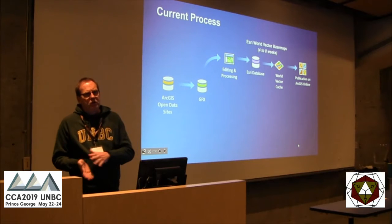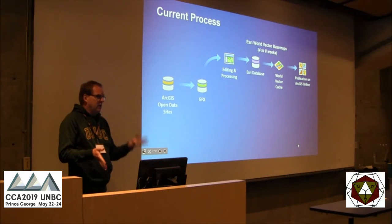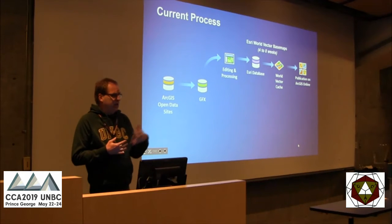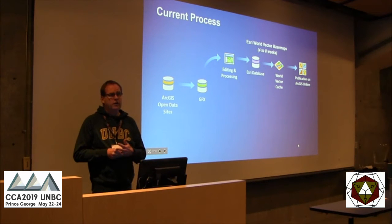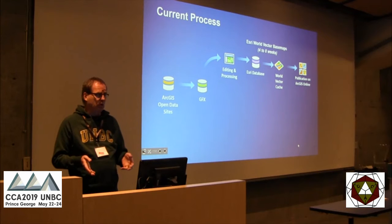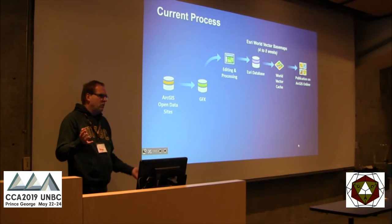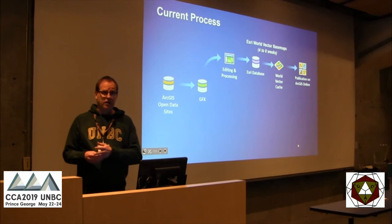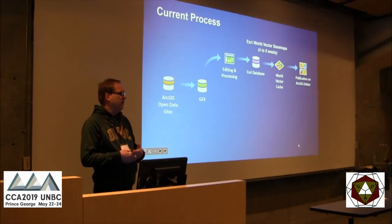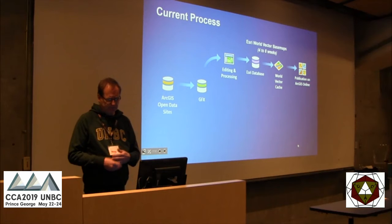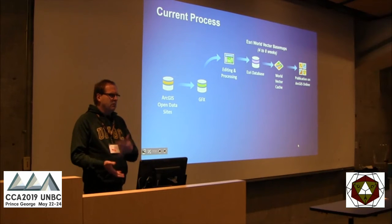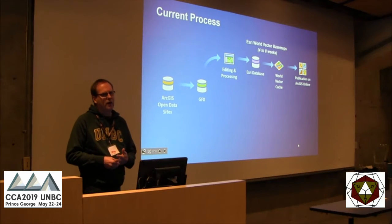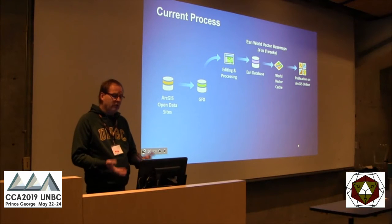Once we've done that, we put the data into the Esri World database, which is a collection of databases covering the entire world. Every three weeks, the folks at Esri generate new vector tile cache for the entire world. The whole workflow generally takes about four to eight weeks from when we get the data to when it's published on ArcGIS Online, depending on when we hit that update cycle — which is much improved over our old raster update process.